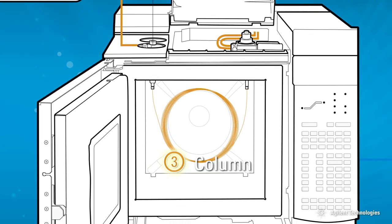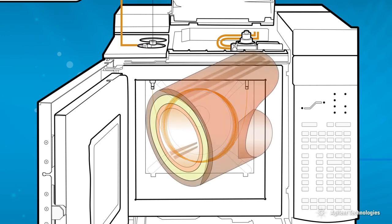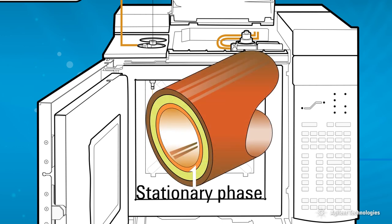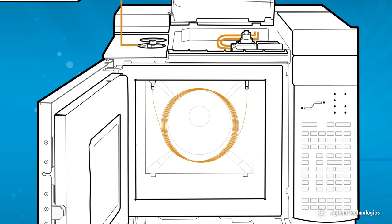Column: The column is the heart of the GC. It contains a very viscous liquid called a stationary phase that is used to separate the sample by virtue of solubility and boiling point. The column is temperature controlled in an oven.